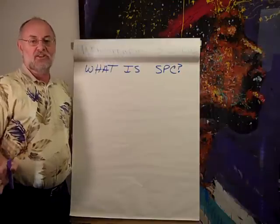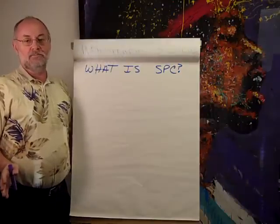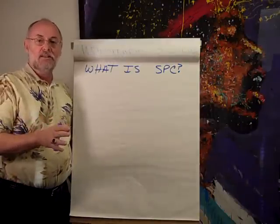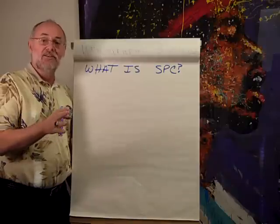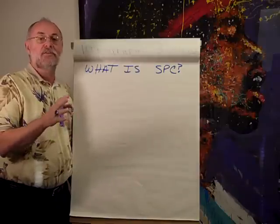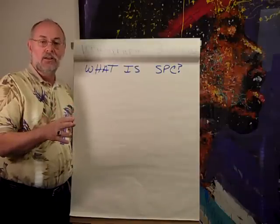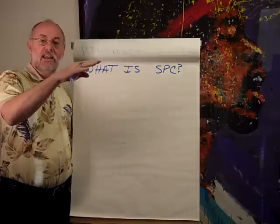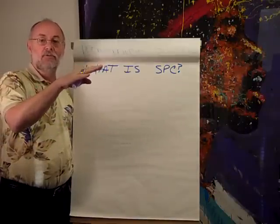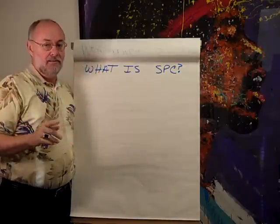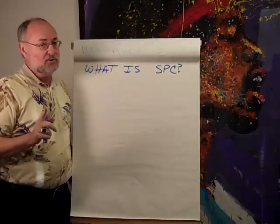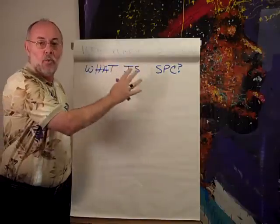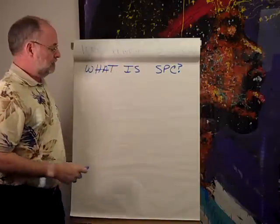What is statistical process control? In the DMAIC process, the C stands for control. Once we've made an improvement, we want to sustain that new level of performance. And this is often where most groups fail — to implement a way to measure and monitor that.